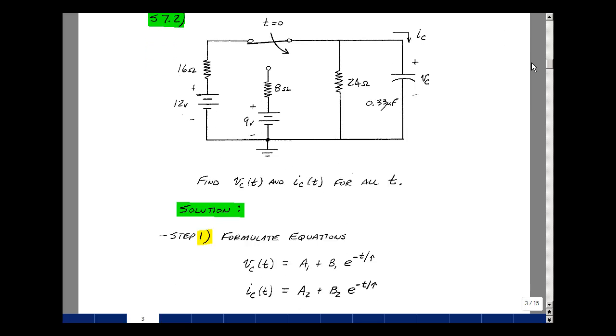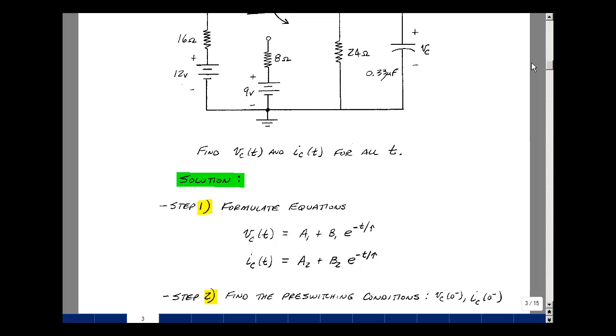Step 1 is to formulate the equations. Since I have a one capacitor circuit, I have a first-order differential equation, and the form of the solution for any voltage or any current is a plus b times e to the minus t over tau. So we'll do the same thing here for our two equations using a subscript 1 and 2. Tau will be the same for any voltage or any current that we solve for.